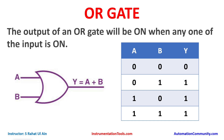No matter how many inputs are connected with the output, any one of those inputs should be ON, then the output will be ON. So let's move to EcoStruxure MachineExpert, and then we will draw the ladder logic for OR gate.